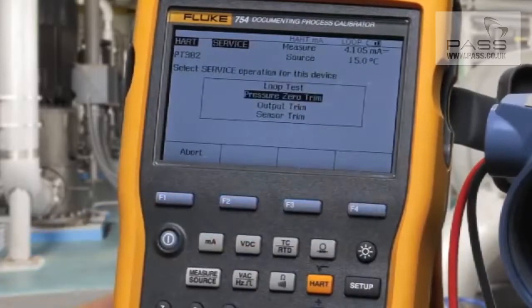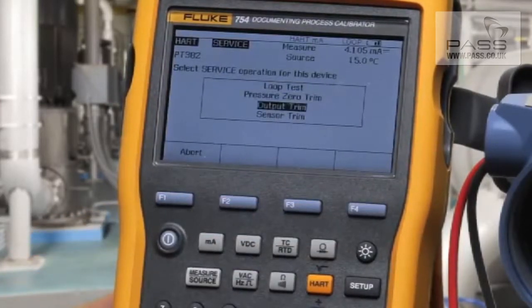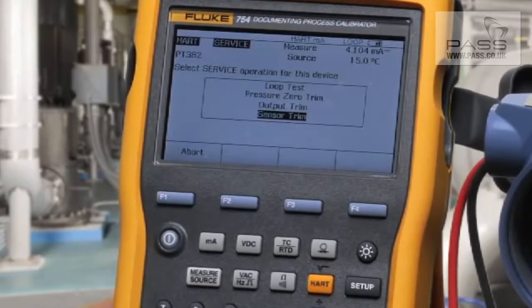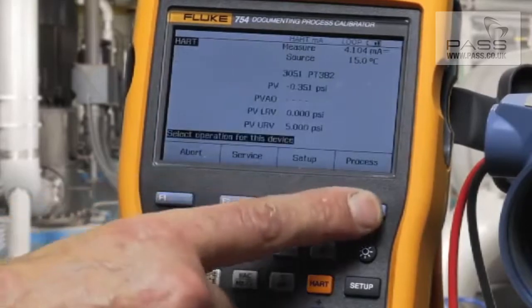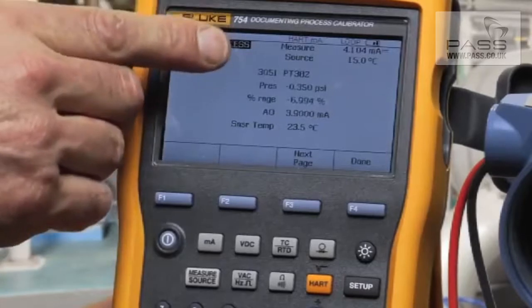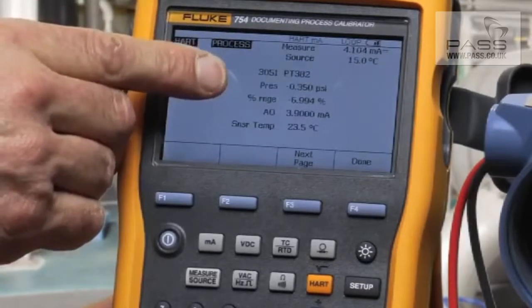We can also do a pressure zero trim, output trim, and a sensor trim offline from an as-found ESLIFT calibration activity. Also, in process, you can view the tag, the applied pressure, percent of range, and the temperature of the transmitter.